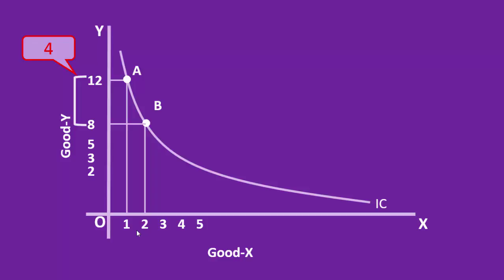After the exchange, his new combination is B. It consists of eight units of good y and two units of good x. In the segment AB, marginal rate of substitution of x for y is four.